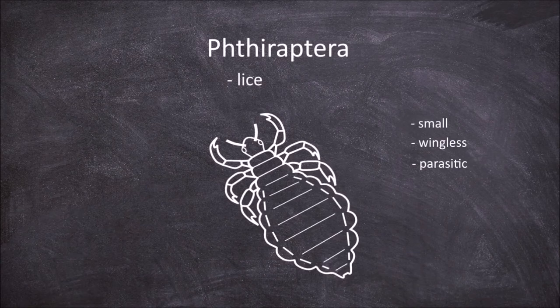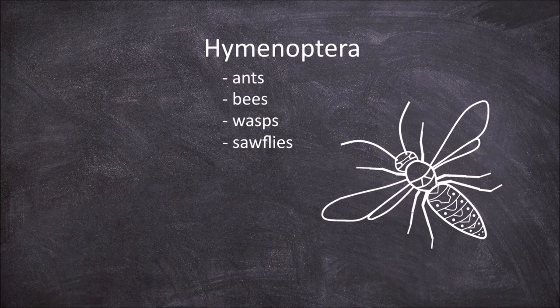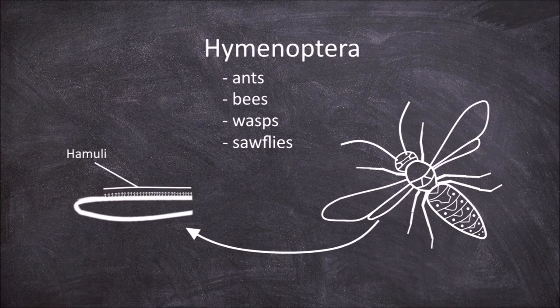The next order is the Hymenoptera, which are the ants, bees, wasps and sawflies. The characteristic feature of this order is the presence of hamuli on the hindwing — hook-like structures that lock onto the forewing, holding the two pairs of wings together. The majority of the Hymenoptera, all those except the sawflies, also characteristically possess a constricted waist.